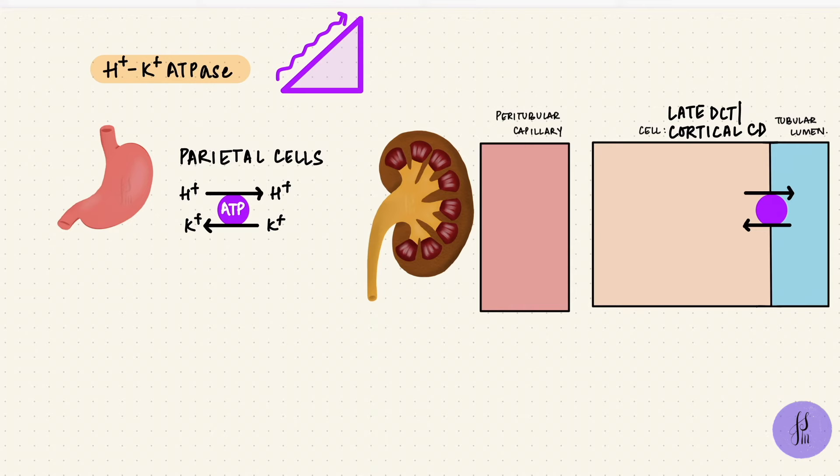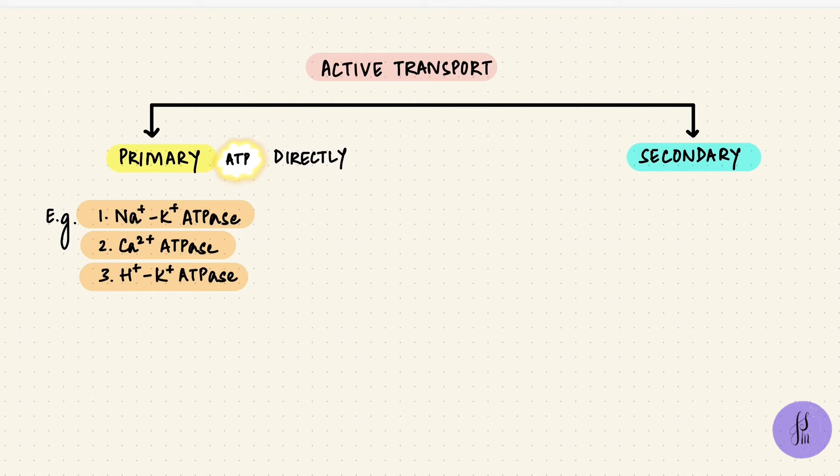All of this we talked about till now, that was primary active transport, where ATP was used directly. Secondary active transport uses ATP indirectly. One solute moves downhill along its gradient from high to low, and a second or sometimes a third solute gets coupled with it, moving against its gradient from low to high. The downhill solute is usually sodium.